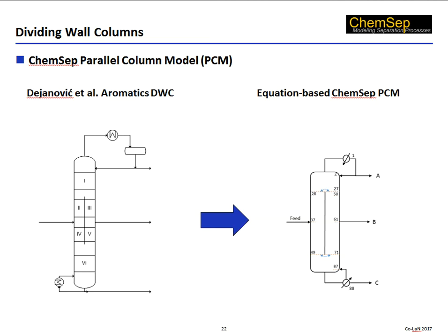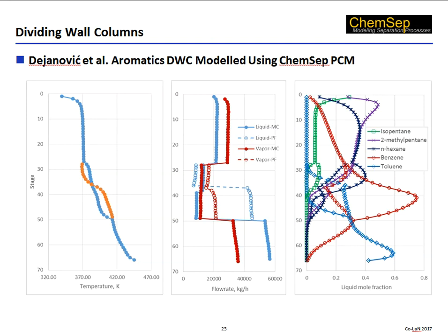The Parallel Column Model is equation-based, meaning all of the equations are solved simultaneously using Newton's method. Results from the ChemSat Parallel Column Model for the Dejanovic column are shown here: on the left is the temperature profile, in the center the flow profiles, and on the right, selected composition profiles in the liquid phase.